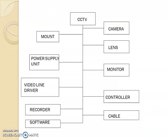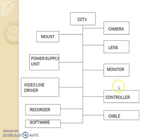If you look at the components of CCTV, you have a mount, power supply unit, video line driver, recorder, software, camera, lens, monitor, controller, and cable. All these are components related to CCTV and I will be explaining each one of them in detail.